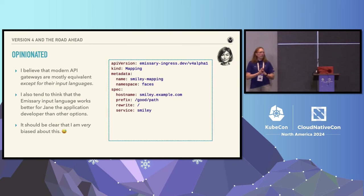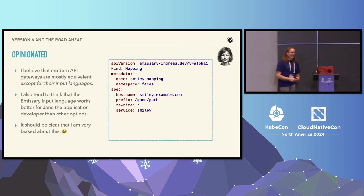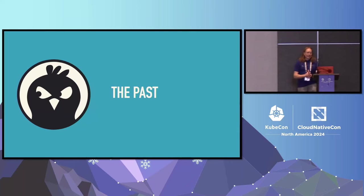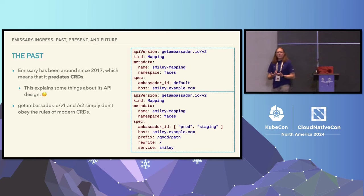Now, that's the quick overview of the project. We have a couple of options here — one is I can go ahead and talk about the past and the present and the future, or you all can start asking questions. We'll just continue on. We're going to talk a little bit about the past. Emissary is old — it has been around since 2017. This is particularly fascinating because it means that Emissary predates CRDs.